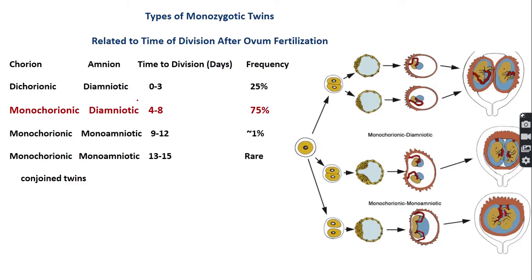In monozygotic twin pregnancy, a single ovum is fertilized by a single sperm. This zygote splits early in development and produces two blastocysts. This type is known as monozygotic twin pregnancy. The two blastocysts produce two chorionic sacs, two placentas, and two inner cell masses produce two yolk sacs and two amnions.